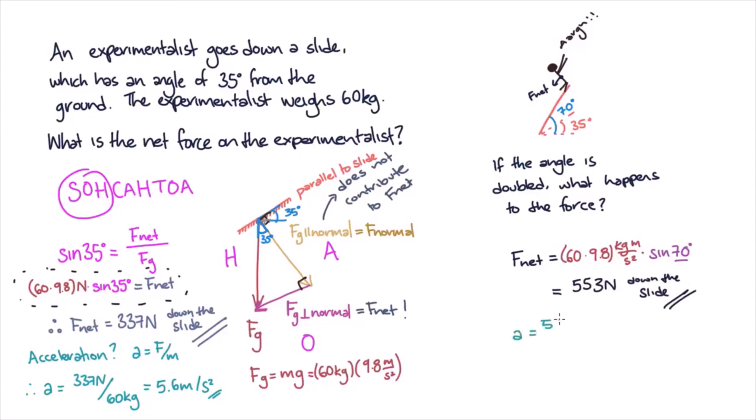As before, we can use our equation for acceleration to find that the experimentalist will accelerate at 9.2 meters per second squared.